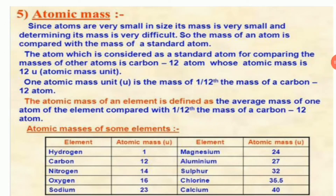Since atoms are very small, their mass is very small and difficult to determine directly. So the mass of an atom is compared with a standard atom — carbon-12 is taken as the standard atom, whose atomic mass is 12. One atomic mass unit (u) is defined as 1/12th the mass of a carbon-12 atom. If we divide the carbon-12 atom into 12 equal parts, the mass of one part is one atomic mass unit.